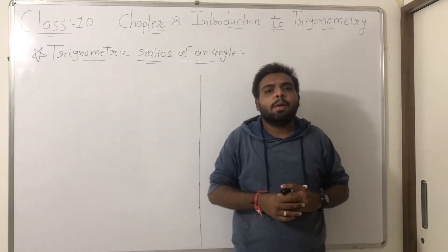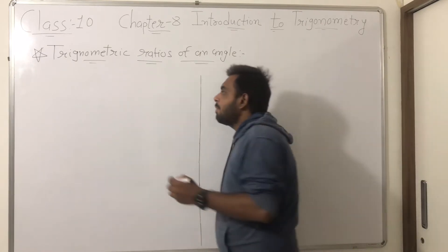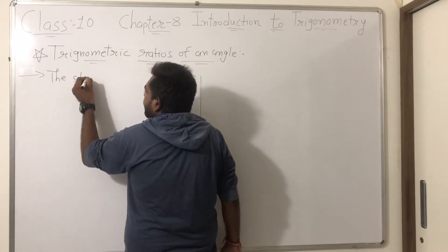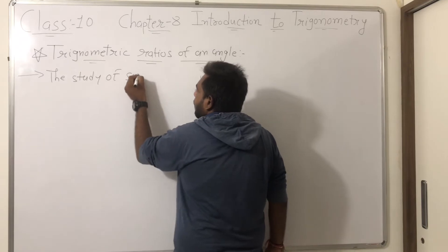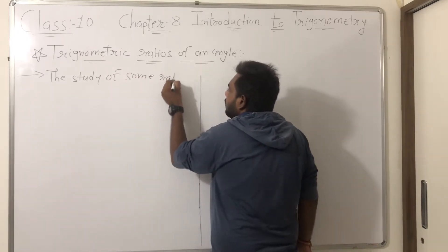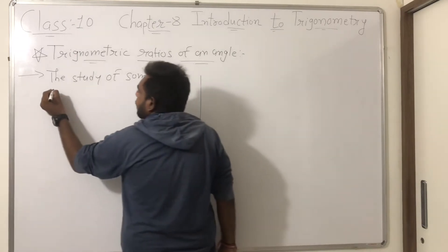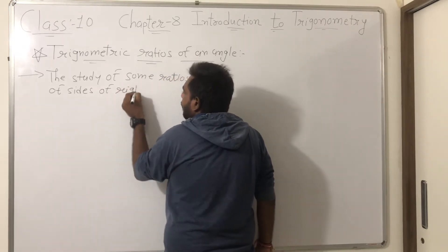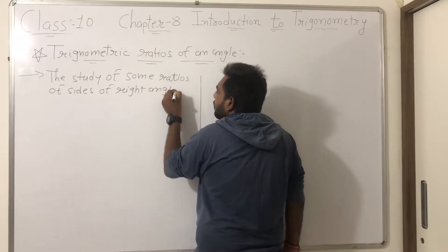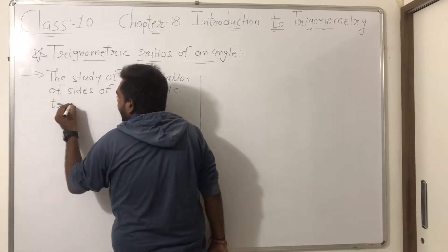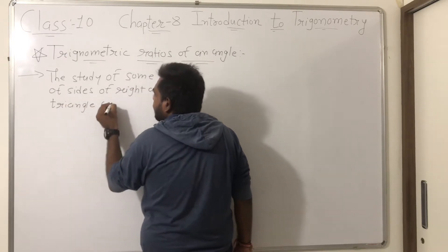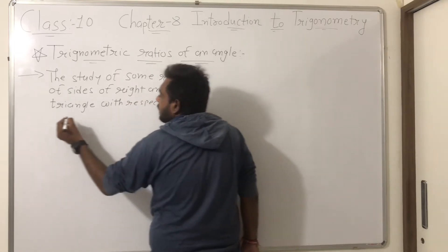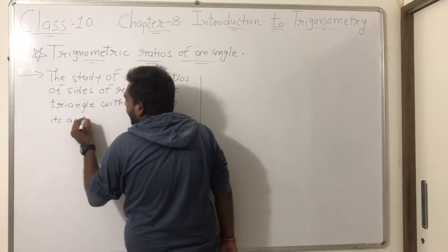So what is the trigonometric ratio of an angle? The definition is: the study of some ratios of sides of a right angle triangle with respect to its acute angle.